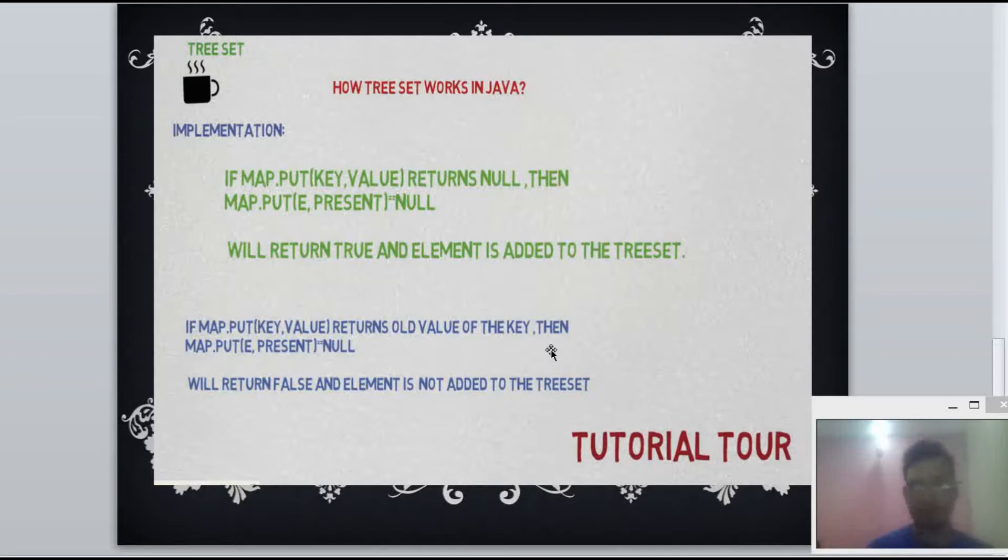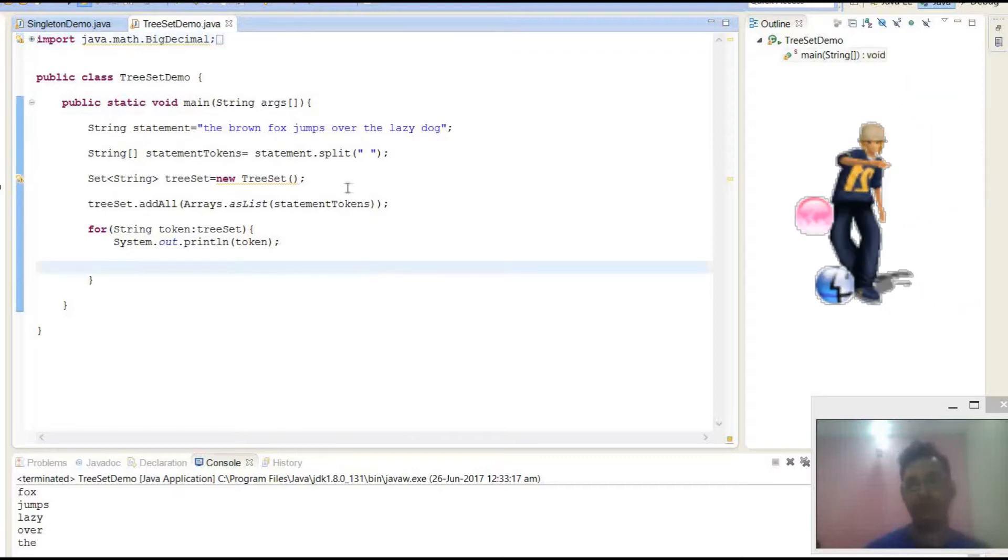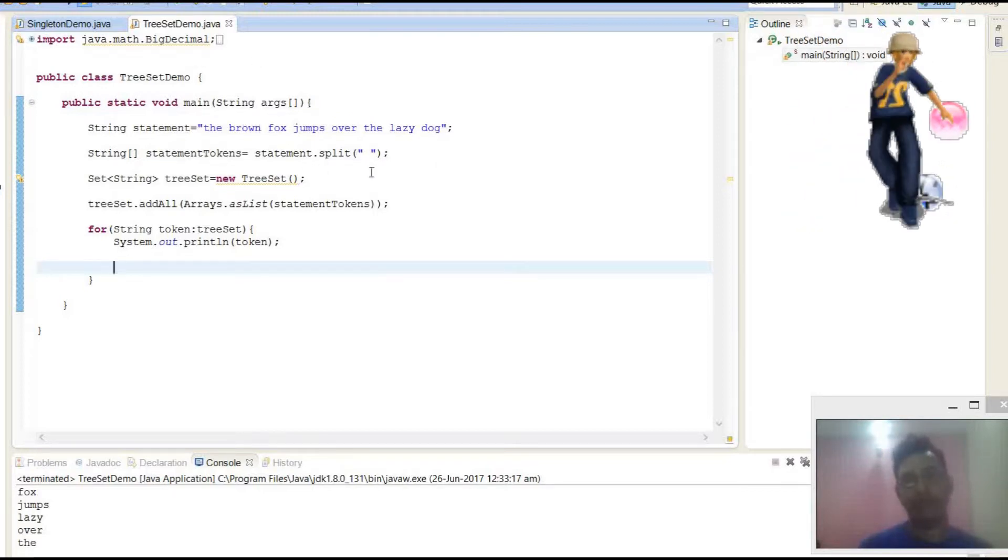Let's try out one example in Eclipse. Here I have created one demo class TreeSetDemo and taken one string object and collection of words: 'the brown fox jumps over the lazy dog', and I have split it by split method.